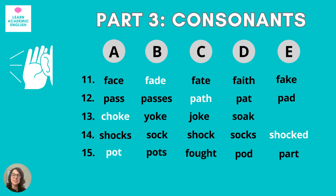Okay, let's go to the next part — consonants. Number eleven: 'fade' — that was B, ends with a D. Number twelve: 'path' — ends in the voiceless TH sound. I have a video about TH sounds that I'll link above. Number thirteen: 'choke' — that's the CH sound. Number fourteen: 'shocked' — this is the past tense form, and the ED sounds like a T. And number fifteen: 'pot.'